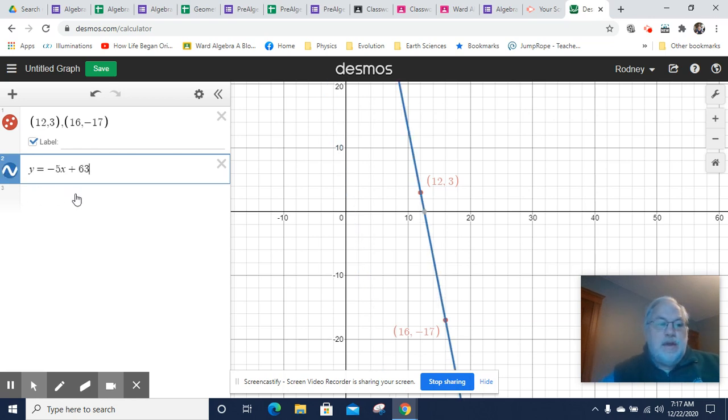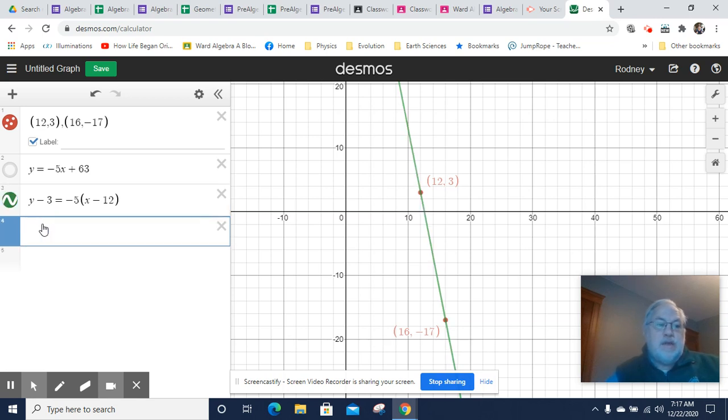Now, we already demonstrated that y equals negative 5x plus 63 should do it. That's cool. But now, let's try the other version that I had. I had y minus 3 because that's the y value for 12, 3 equals negative 5. And this is rearranging the slope equation equals negative 5 times x minus 12. And that worked, too.